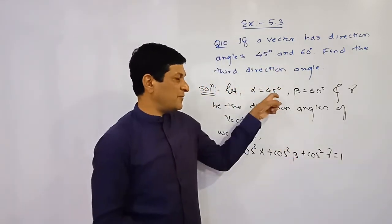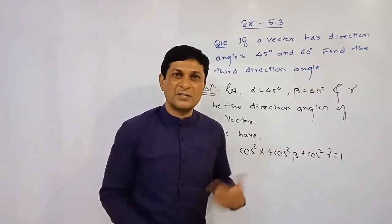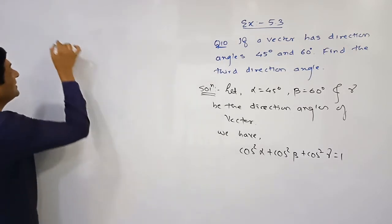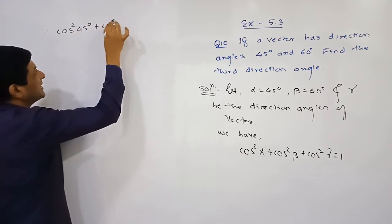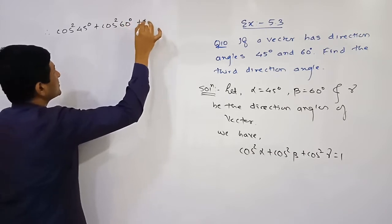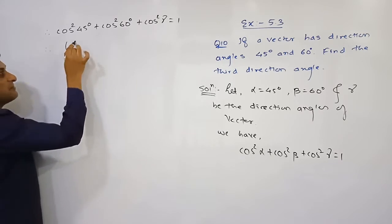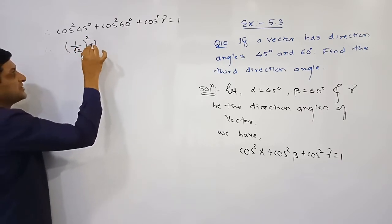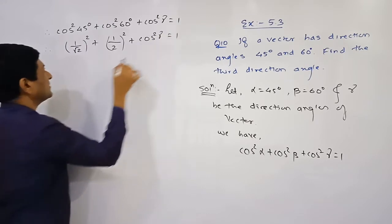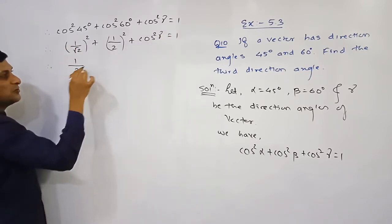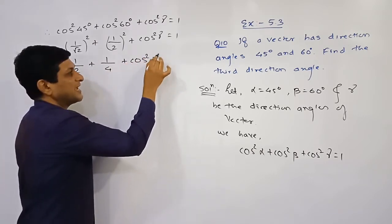Substituting alpha = 45 degrees and beta = 60 degrees into the condition cos²α + cos²β + cos²γ = 1, we get: cos²(45°) + cos²(60°) + cos²γ = 1. The value of cos 45° is 1/√2, so its square is 1/2, and cos 60° is 1/2, so its square is 1/4. This gives us: 1/2 + 1/4 + cos²γ = 1.